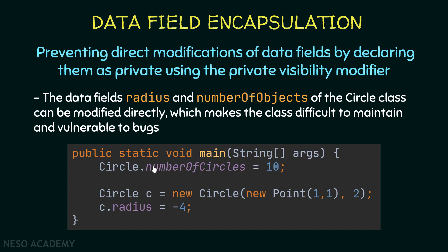We are able to access this variable using the dot operator. In another example, I'm creating a circle c with a center point and radius equal to 2. I'm able to access the radius property and assign it to be equal to a negative value, and of course we don't want that — we want to prevent the user from assigning a negative value to the radius.